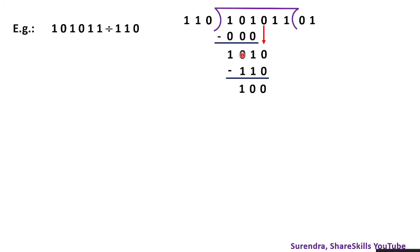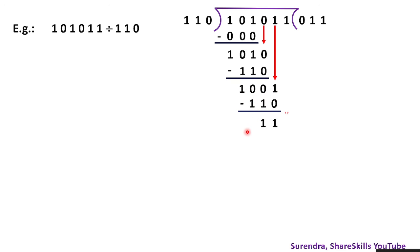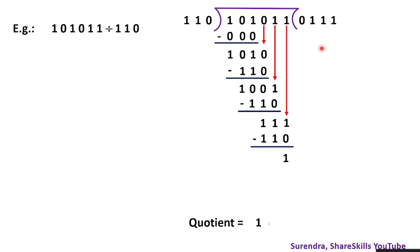Since we can't subtract 0 from 1 in one position, we borrow from the left — 2 minus 1 is 1. We bring down the next digit, giving us 1001. Dividing again by 110, the quotient digit is 1. After subtraction we get a remainder. Bringing down the final digit gives 101 — dividing by 110 again, quotient is 1. The final quotient is 111 and the remainder is 1. That's how binary division works.